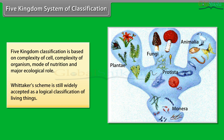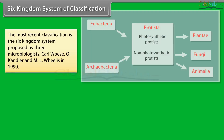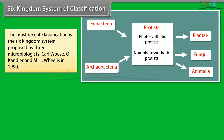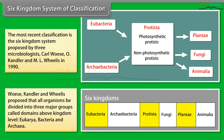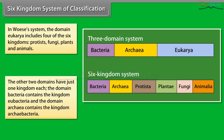The most recent classification is the six kingdom system proposed by three microbiologists Carl Woese, O. Kandler, and Emil Wilis in 1990. They proposed that all organisms be divided into three major groups called domains above kingdom level: Eukarya, Bacteria, and Archaea. In Woese's system, the domain Eukarya includes four of the six kingdoms: Protists, Fungi, Plants, and Animals. The other two domains have just one kingdom each — the domain Bacteria contains kingdom Eubacteria, and the domain Archaea contains kingdom Archaeabacteria.